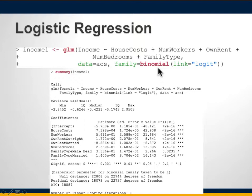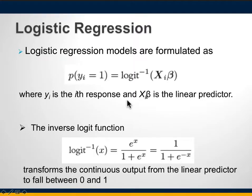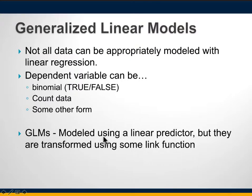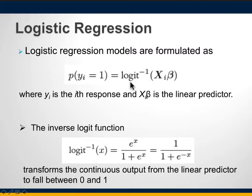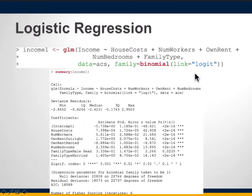The additional command in logistic regression is the family argument. Since we want the answer as yes or no, we set family to binomial. For other types of data like count data there are other family options. Our link function is logit, which is a log-based function that takes the linear predictors and produces a linear output that we then transform using the inverse logit function.